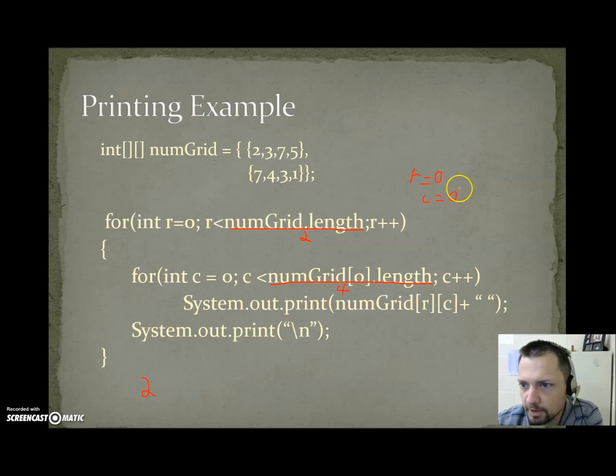Then it comes around, C goes to a 1. Then we print 1 at 0, 1, which is a 3. Then it comes around, C goes up to 2. Then we print 0, 2, which is a 7. Then C changes to a 3. We come around, and 3 is less than 4, so we do it again. We print the one at spot 0, 3, which is 5. C goes to a 4. Is 4 less than 4? No. The loop stops.